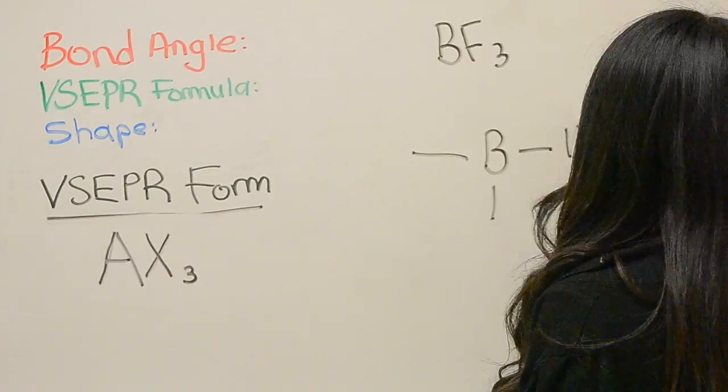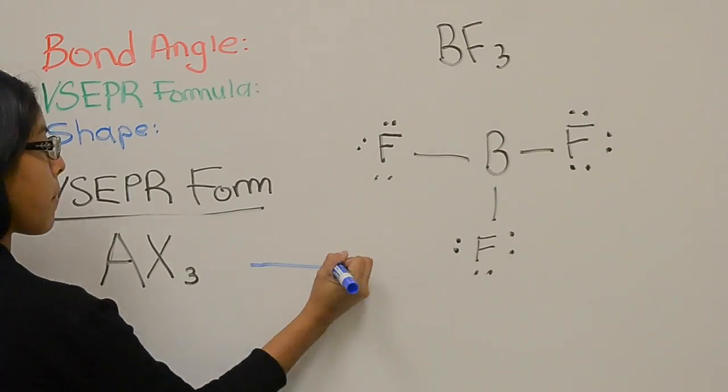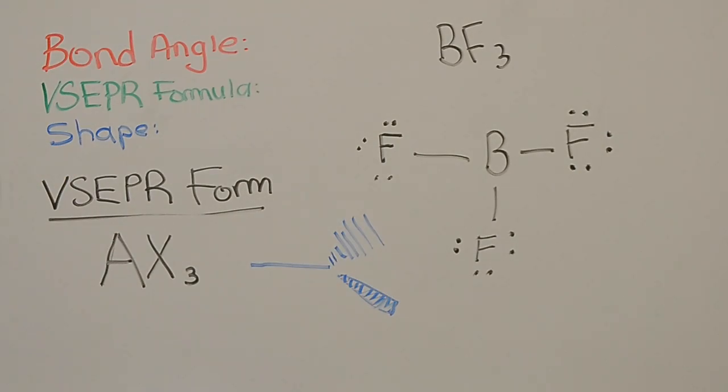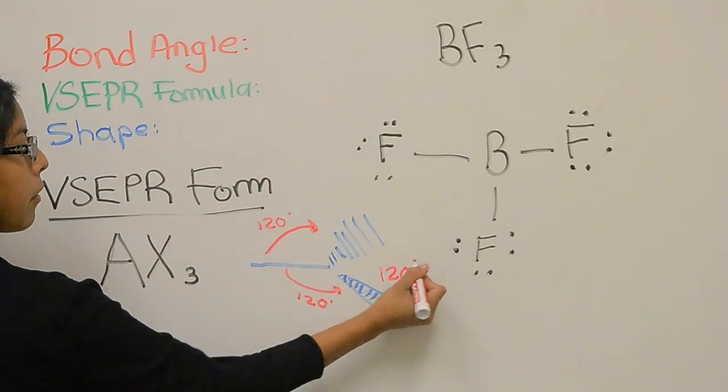Now we have boron trifluoride with the VSEPR formula of AX3 and a bond angle of 120 degrees. Its shape is a trigonal planar.